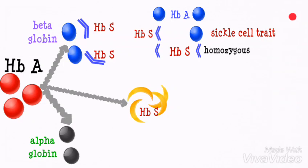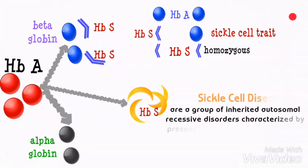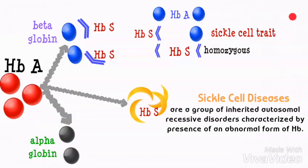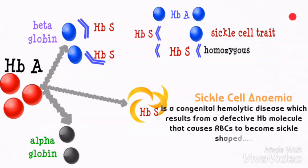Sickle cell diseases are a group of inherited autosomal recessive disorders characterized by the presence of an abnormal form of hemoglobin in the erythrocytes. This abnormal hemoglobin causes the erythrocytes to stiffen. Sickle cell anemia is a congenital hemolytic disease which results from a defective hemoglobin molecule that causes red blood cells to become sickle shaped; such cells impair circulation, resulting in chronic ill health.